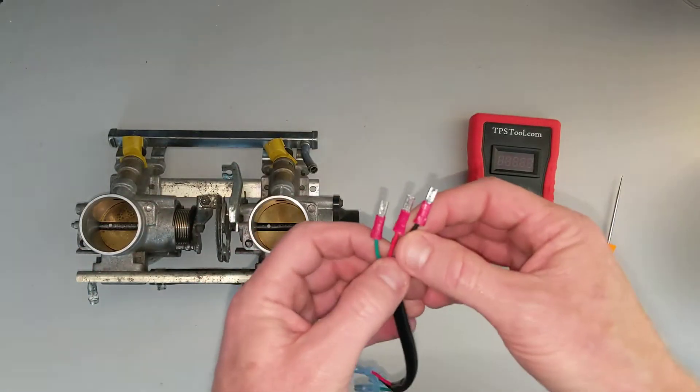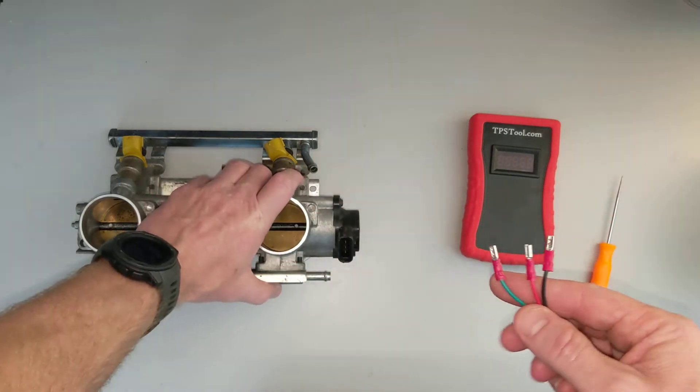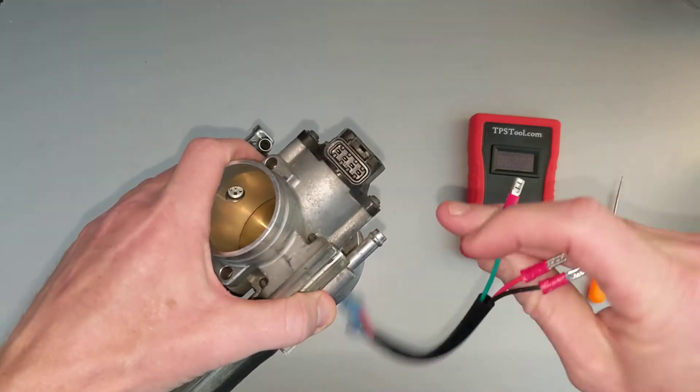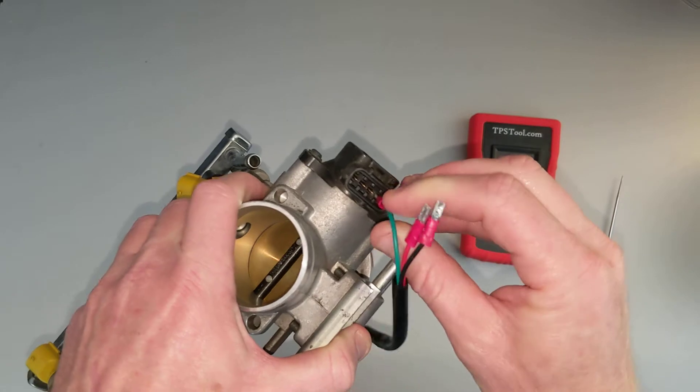So all you have to do is take these little guys, and they plug into the individual pins in the TPS. First we're going to plug in the bottom pin here. We're going to use the green wire. This is our 5-volt supply to the TPS.